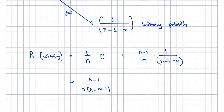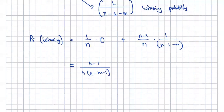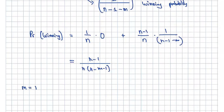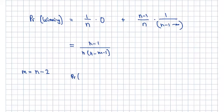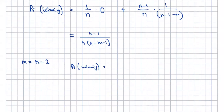This general formula is useful because you can see intuitively what happens as M becomes relatively large. For example, if M equals N minus two, the probability of winning becomes (N minus one) over [N times (N minus (N minus two) minus one)], which simplifies to (N minus one) over N. So as Monty opens more doors, you're almost flipping the probability completely in your favor.